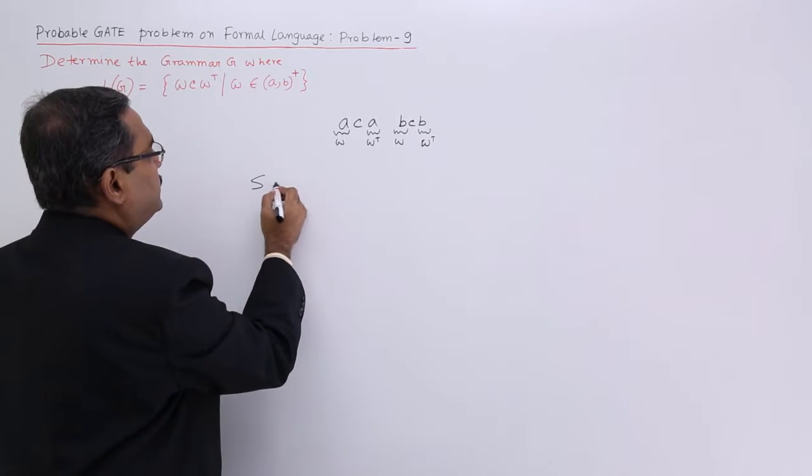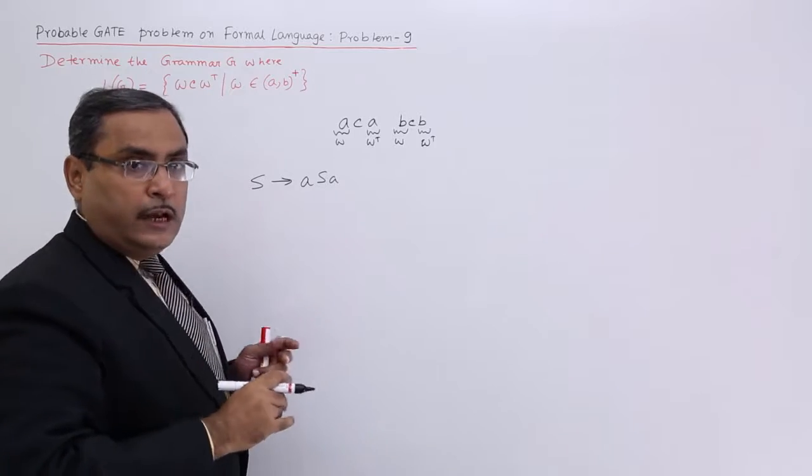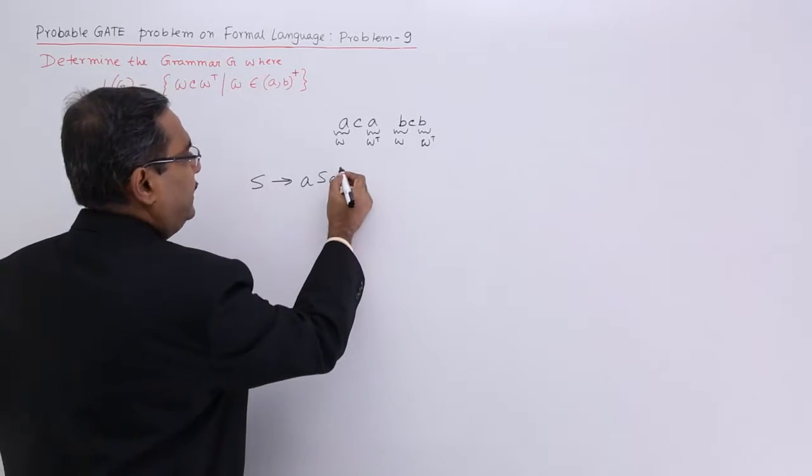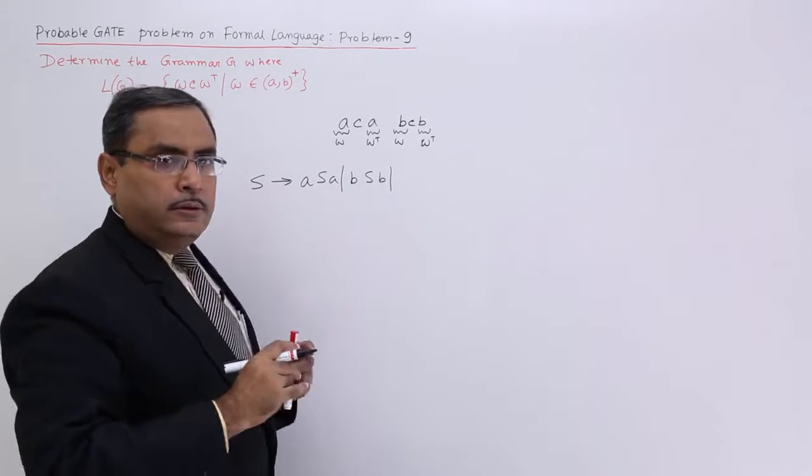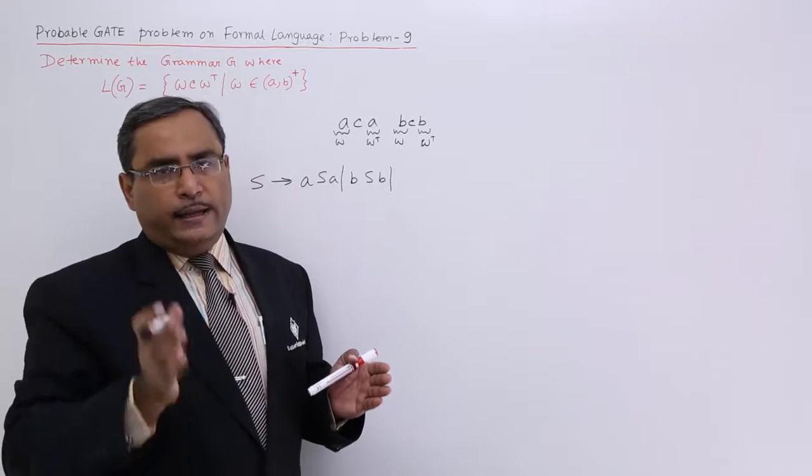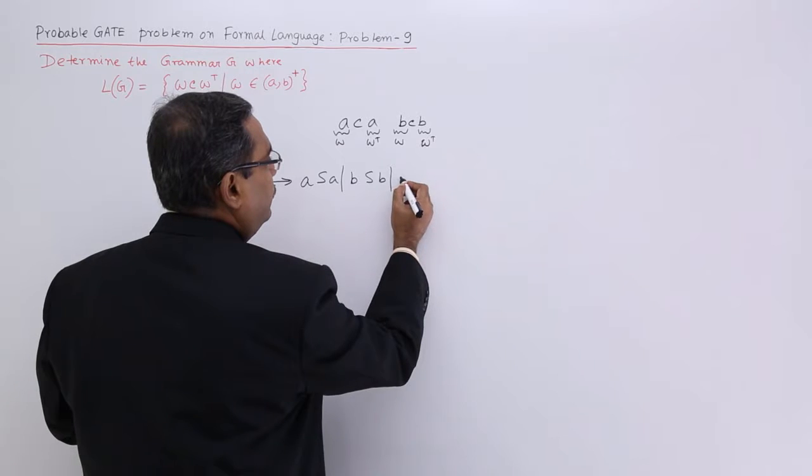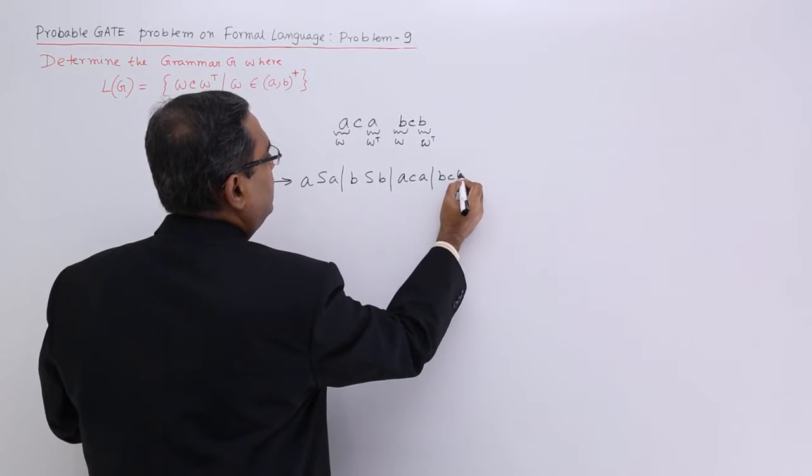How to write this one? S produces A, S, A that means, both side A will be there. Always that will be a balancing and then we shall go for B, S, B same logic. Whenever a B will be formed on the left hand side, another B will be formed on the right hand side and then the minimum string will be A, C, A or B, C, B.